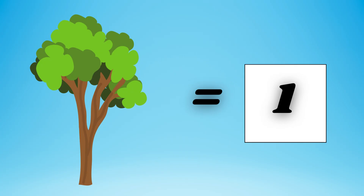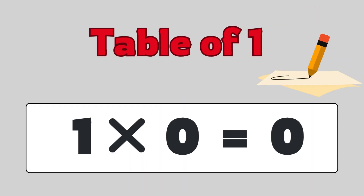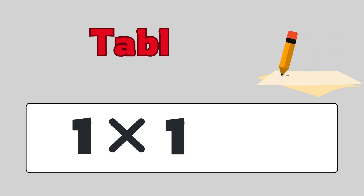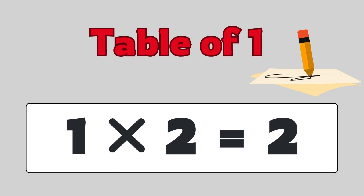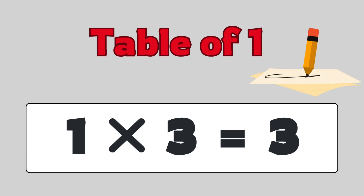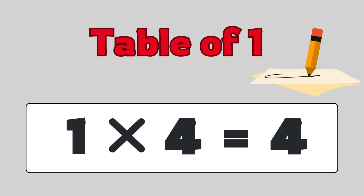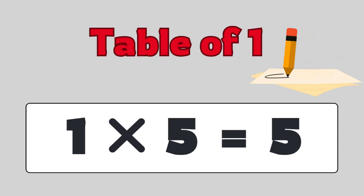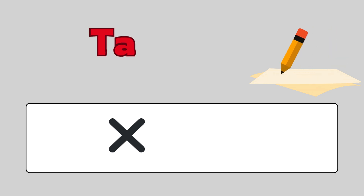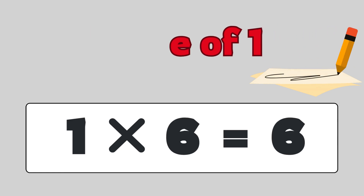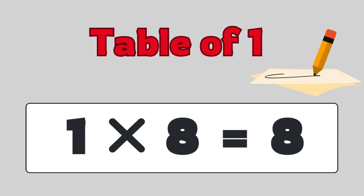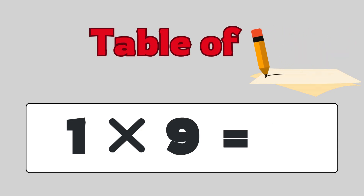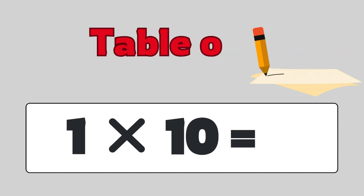Table of 1: 1 times 0 is 0, 1 times 1 is 1, 1 times 2 is 2, 1 times 3 is 3, 1 times 4 is 4, 1 times 5 is 5, 1 times 6 is 6, 1 times 7 is 7, 1 times 8 is 8, 1 times 9 is 9, 1 times 10 is 10.